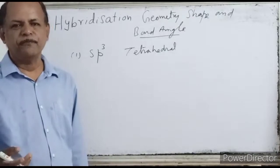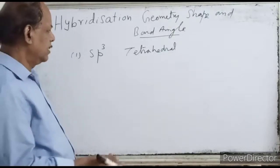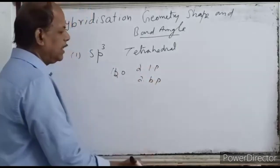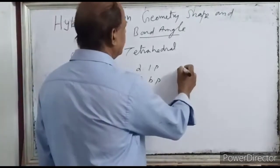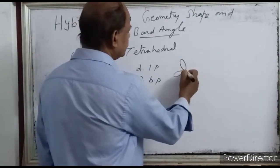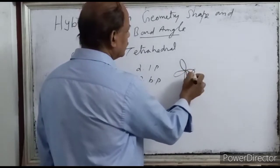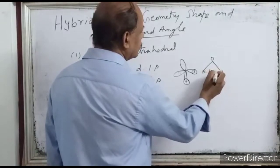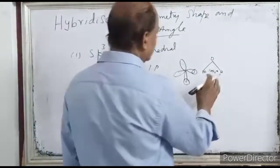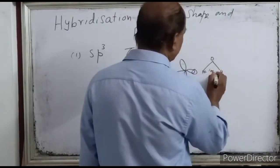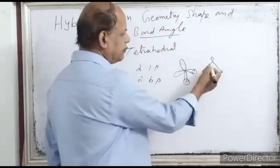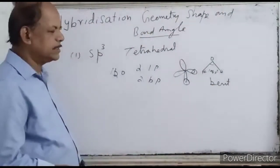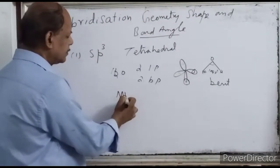The shape of the molecule depends upon the number of lone pairs and bond pairs. For water, there are two lone pairs and two bond pairs. The tetrahedral angle is 109°5', but due to lone pair repulsion the bond angle is 104.5°. The shape is bent.